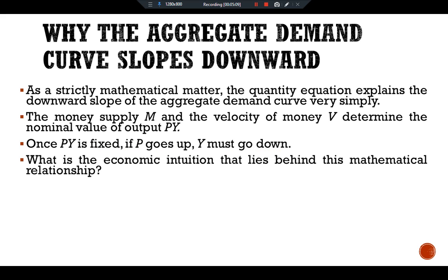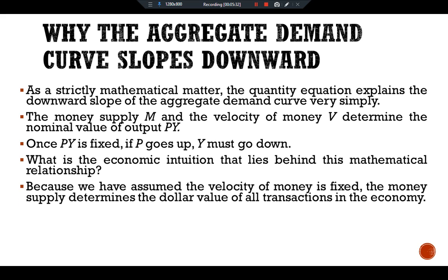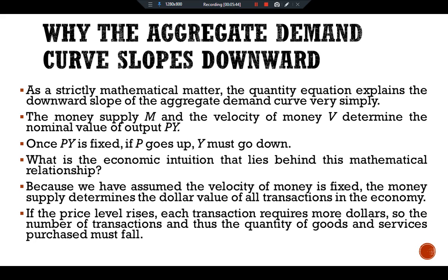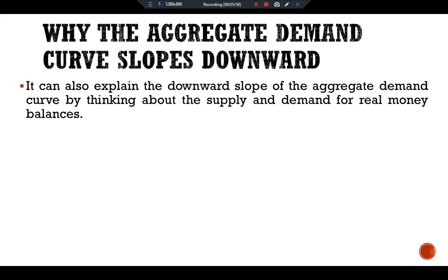What is the economic intuition behind this mathematical relationship? For a complete explanation of the downward slope of the aggregate demand curve, we have to wait for a couple of other videos. For now, consider the following logic: because we have assumed the velocity of money is fixed, the money supply determines the dollar value of all transactions in the economy. If the price level rises, each transaction requires more dollars, so the number of transactions and thus the quantity of goods and services purchased must fall.